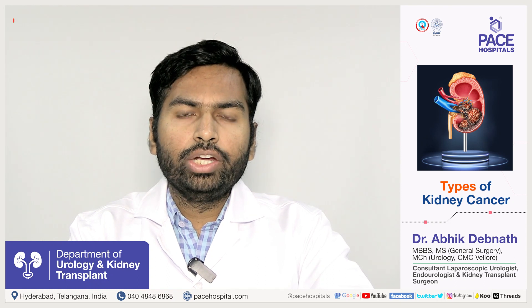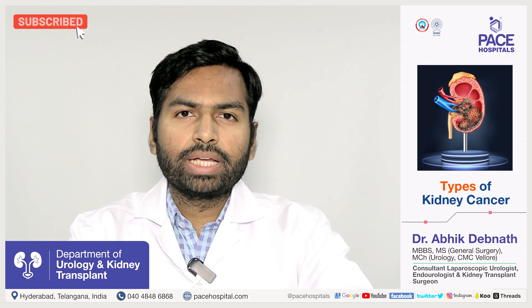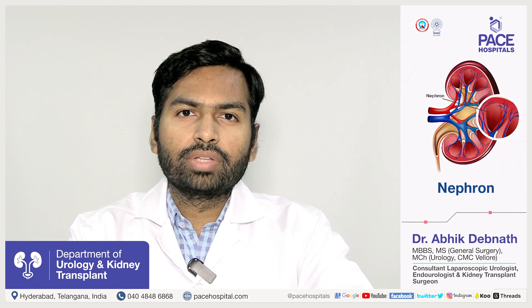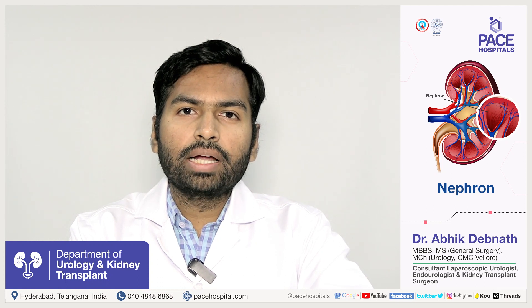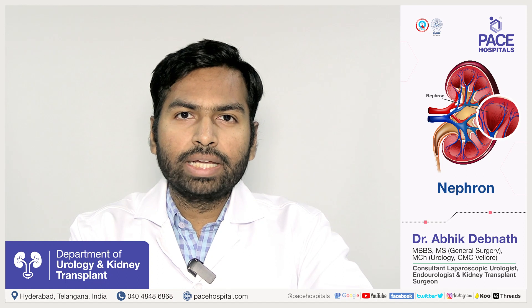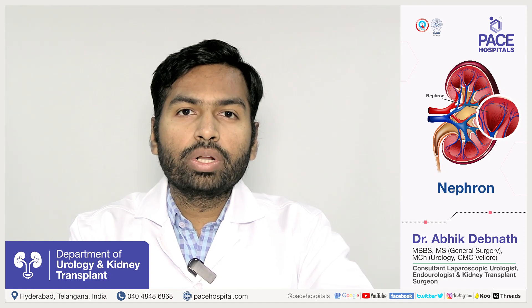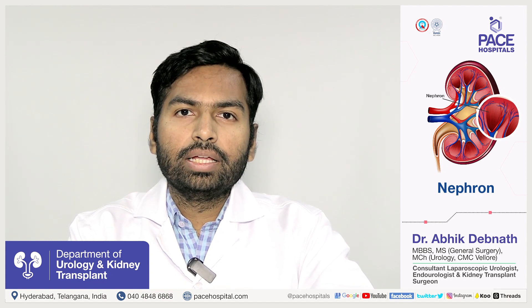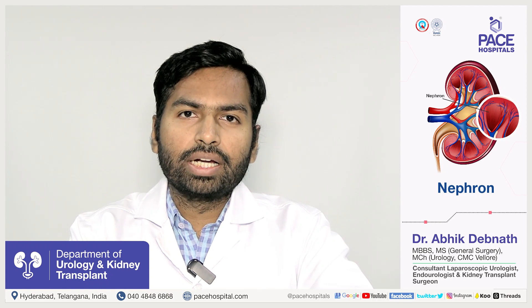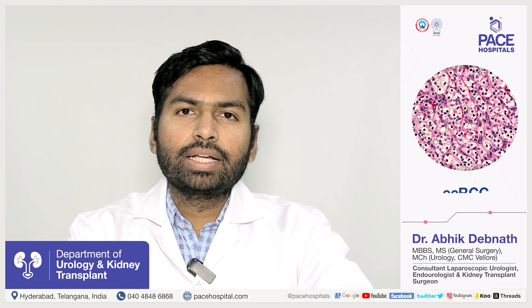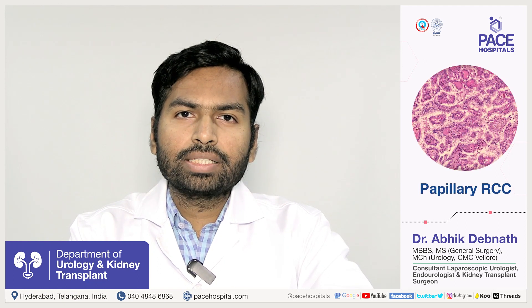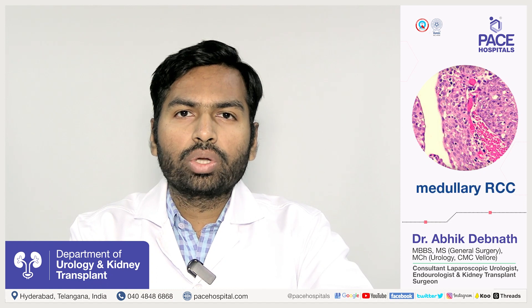To understand the types of kidney cancer, we can divide the kidney into three basic parts: the outer part which consists of nephrons, the inner part which consists of the collecting system, and the third part is the mesenchyme or stromal part. Cancers arising from the outer part or the nephron are commonly called renal cell carcinoma (RCC), which can be of various histological types. The most common is clear cell renal cell carcinoma (CC-RCC). Other types include papillary RCC, medullary RCC, and chromophobe RCC.